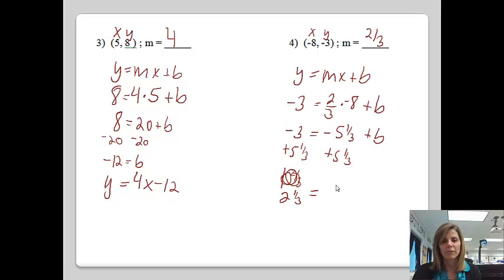And that's going to equal my b. And then I get y equals, my m is going to be 2/3 again, so 2/3 x plus the b value, which is 2 and 1/3.